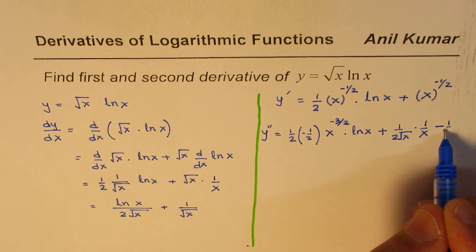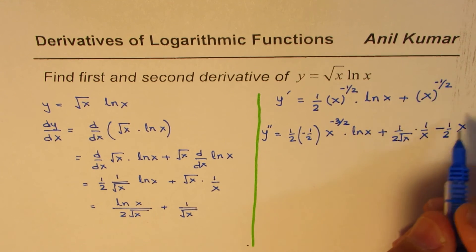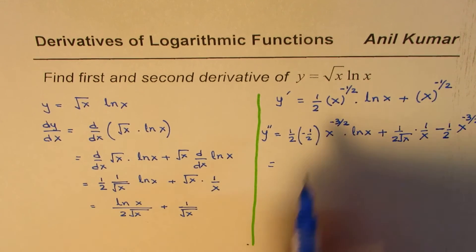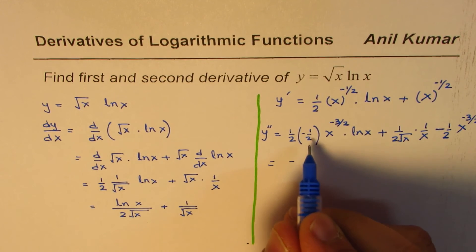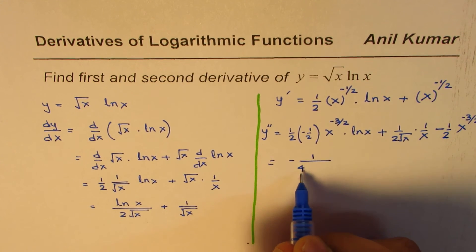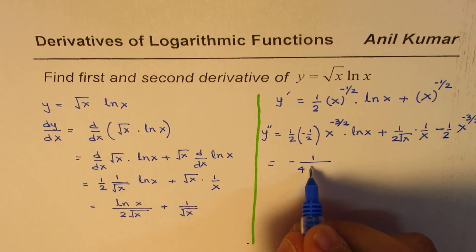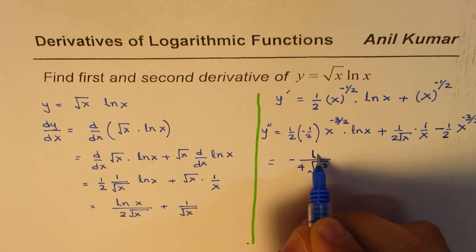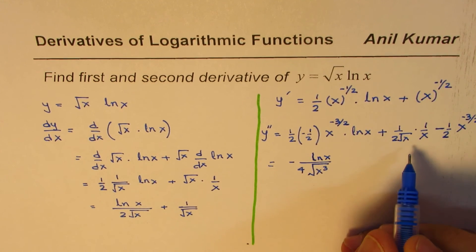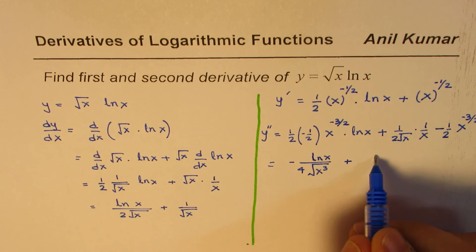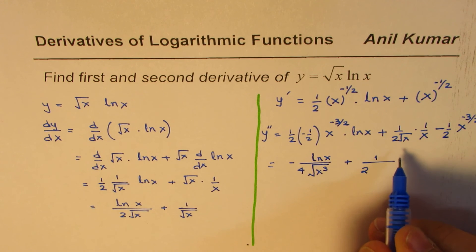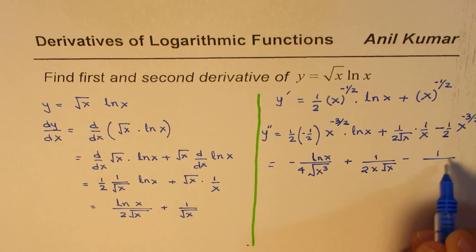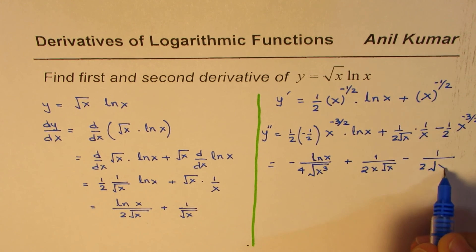The derivative of x to the power of minus half equals minus half times x to the power of minus three over two. Now simplifying: the first term becomes minus one over 4 times x to the power of minus three over two, which can be written as ln x over the square root of x cubed. The second term is plus 1 over 2x times square root x, minus 1 over 2 times square root of x cubed.